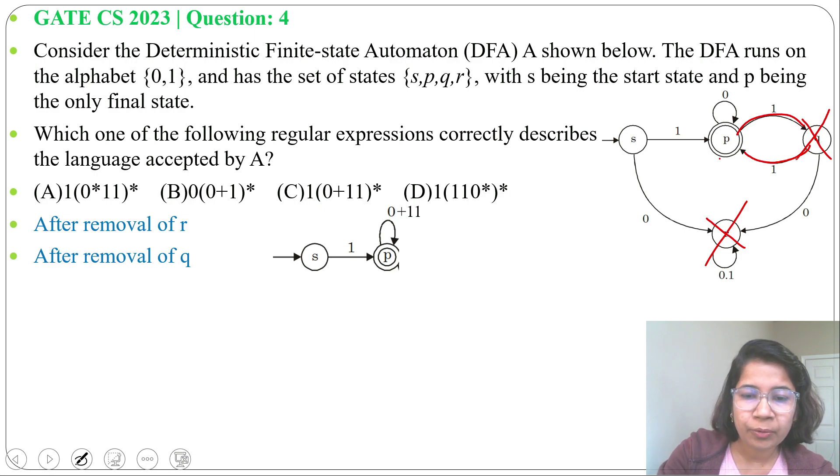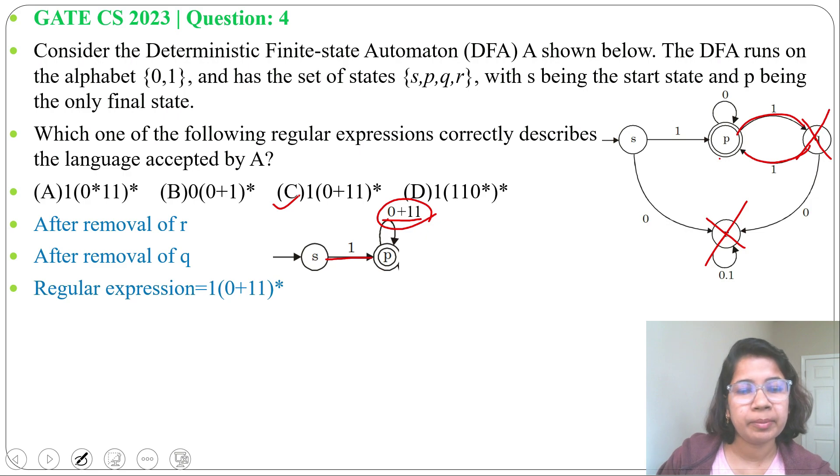So now from P we can reach to P by 0 or 1,1. So regular expression will be 1 from S to P, then (0+11) whole Kleene closure. Any repetition of this. It's present in option C. This is one way.